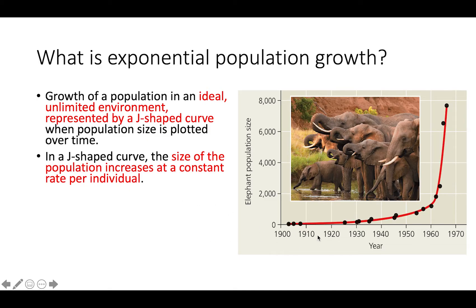So what that means is if every individual is producing one offspring, then one will go to two, and then each of those will have an offspring, so two will go to four, and then each of those will have one offspring, and then four will go to eight. That is going to be increasing in an exponential pattern over time.